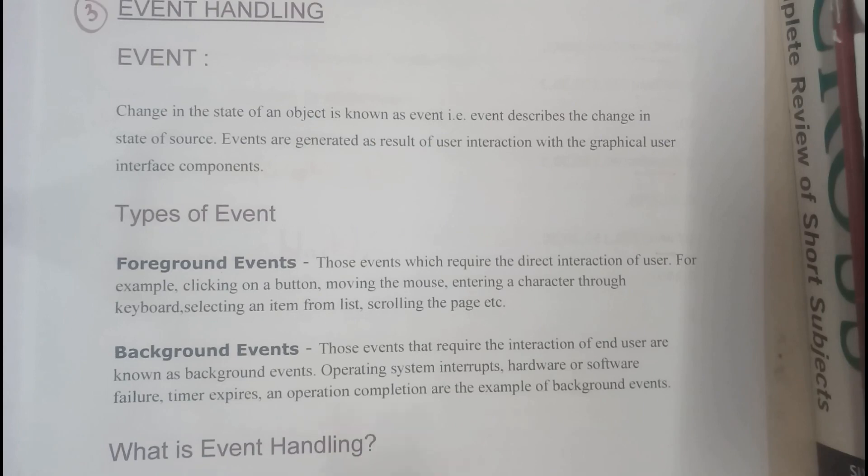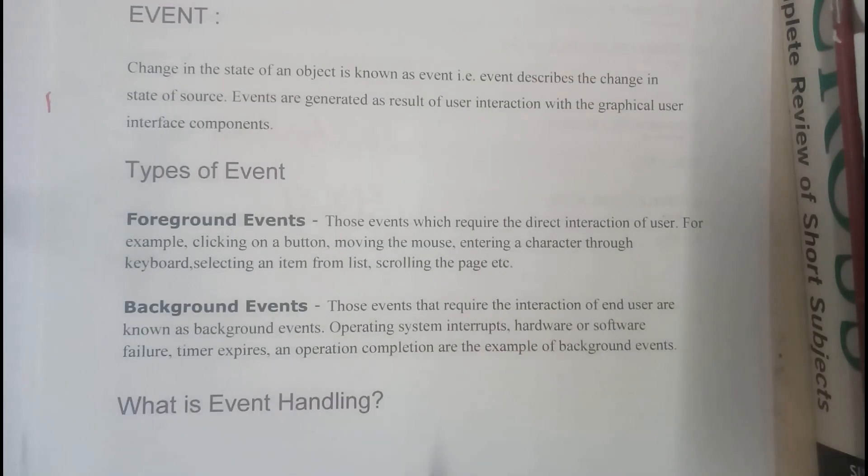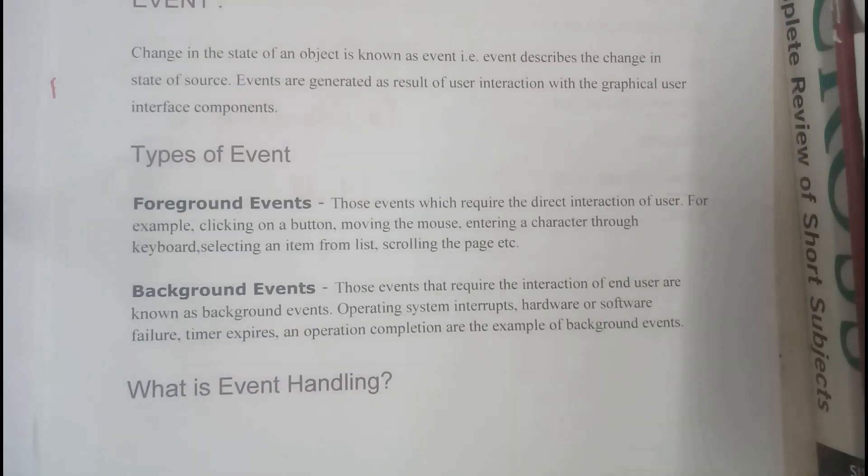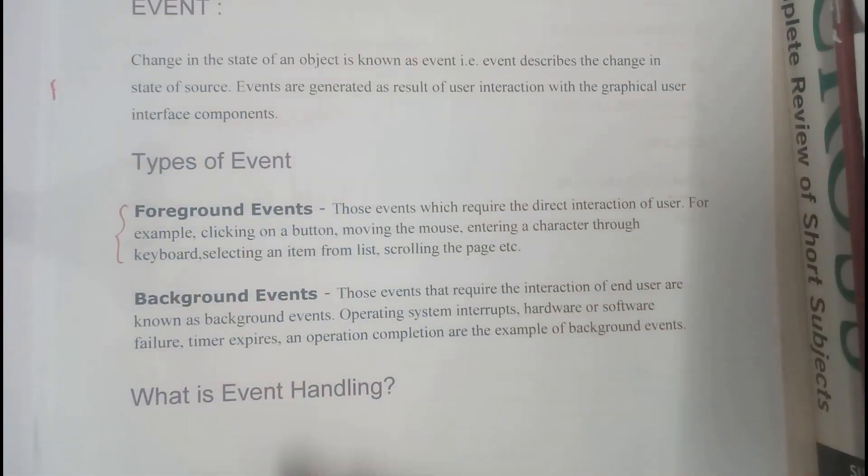The user must be in the presence of the system. For example, clicking a button, movement of mouse, entering a character in the keyboard, selecting an item from a list, or scrolling down a page. These are nothing but the foreground events.